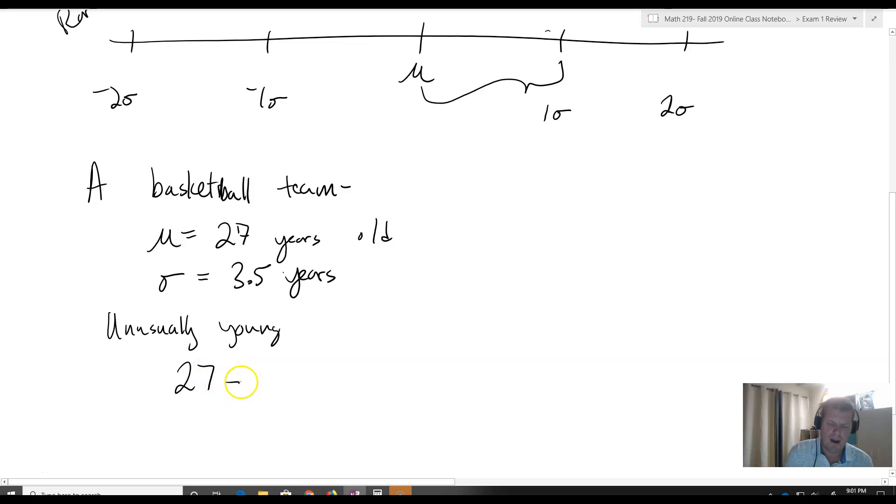That's going to be 27 minus 3.5, that's one standard deviation, minus 3.5, which we actually write as 27 minus 2 times 3.5, which is equal to 20 years old. So that is an unusually young person, two standard deviations away from the mean.